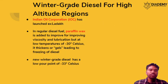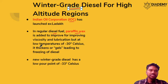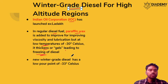The next topic is winter grade diesel for high altitude regions. Indian Oil Corporation (IOC) has developed a winter grade diesel. In normal diesel, paraffin wax is used to improve viscosity and lubrication, but at lower temperatures around minus 50 degrees Celsius, it thickens and gels, leading to freezing of the diesel. This stops machines and causes improper functioning and pollution. The new winter grade diesel will not freeze even at minus 33 degrees Celsius.